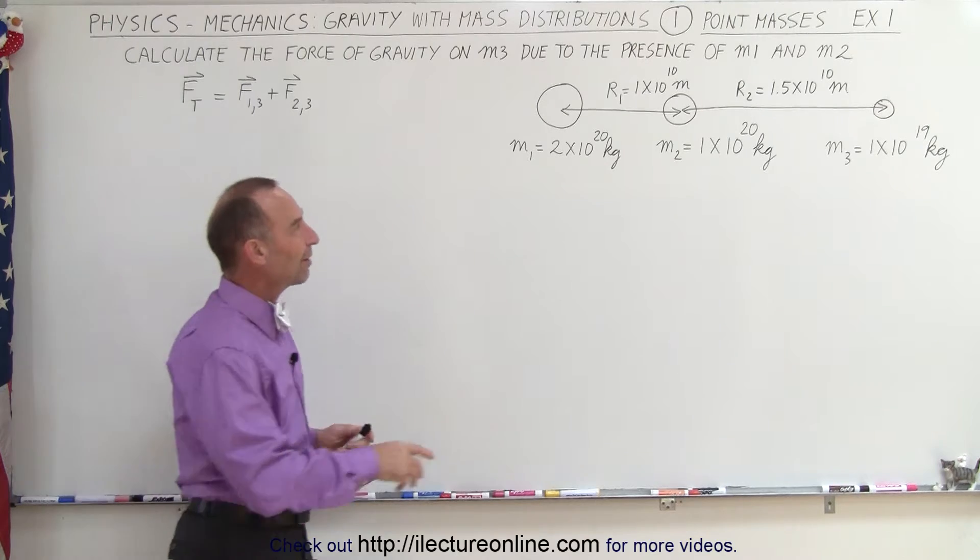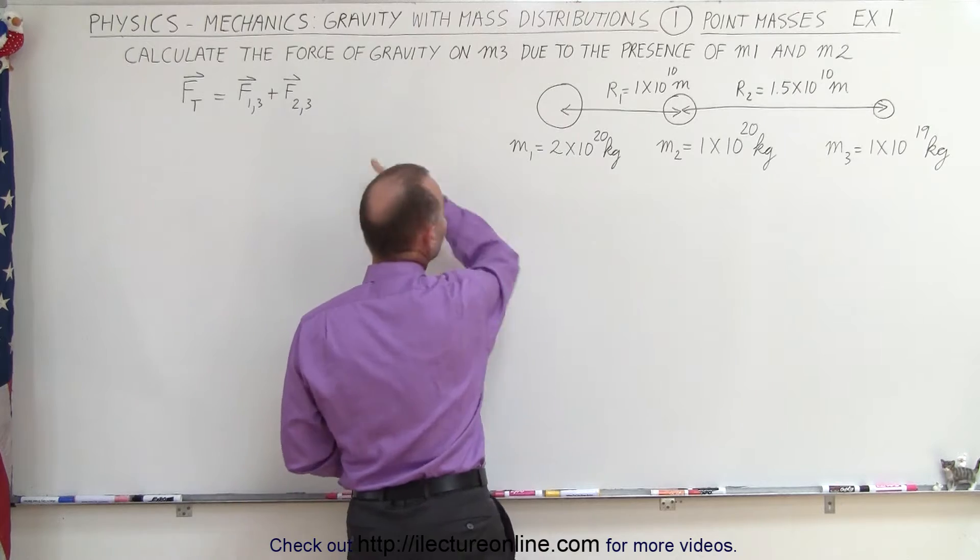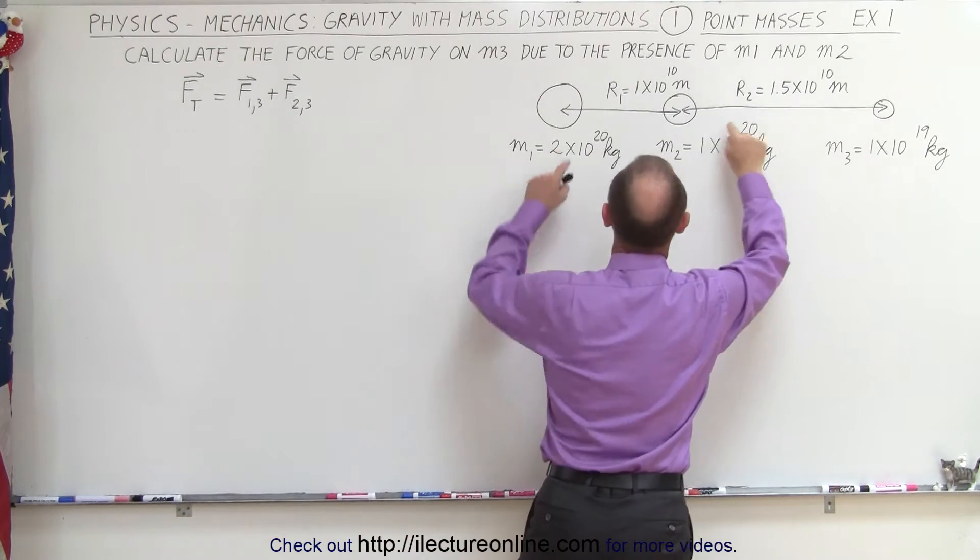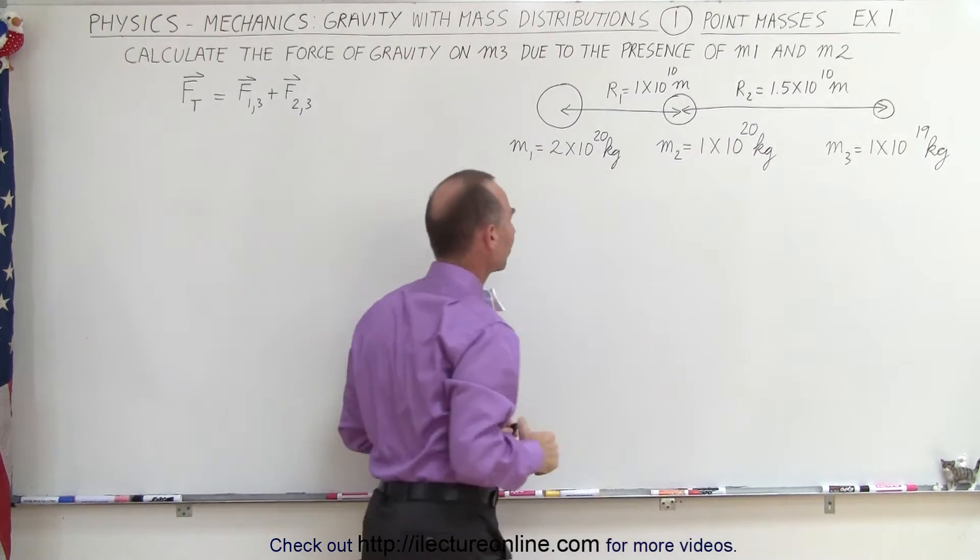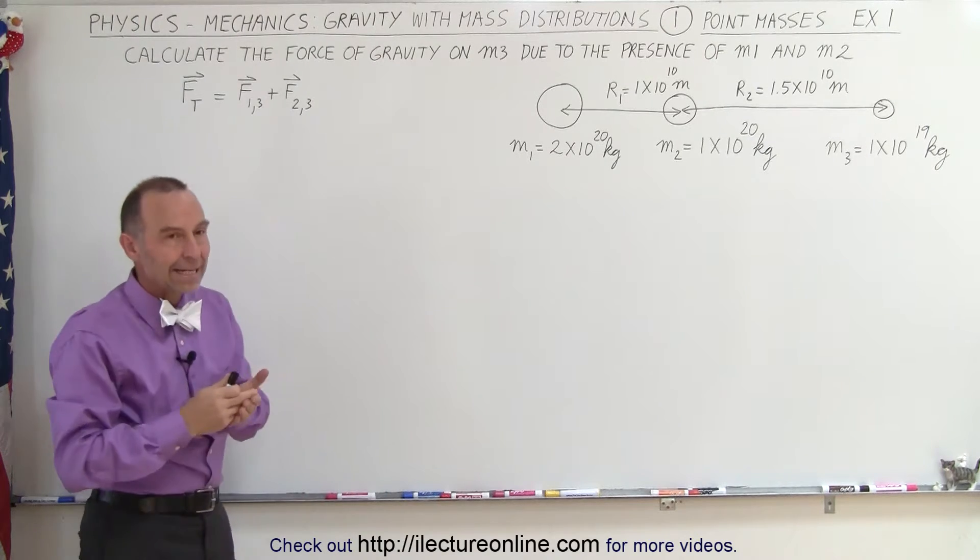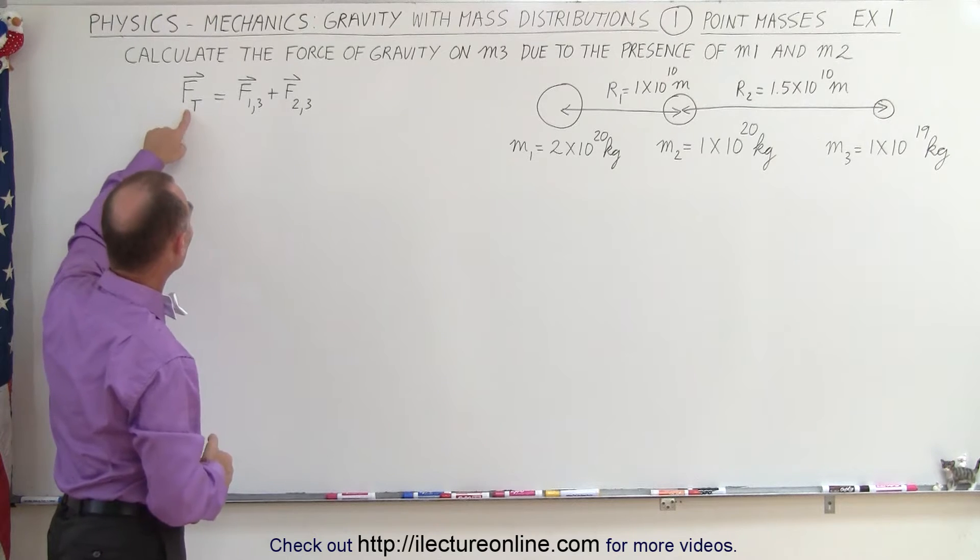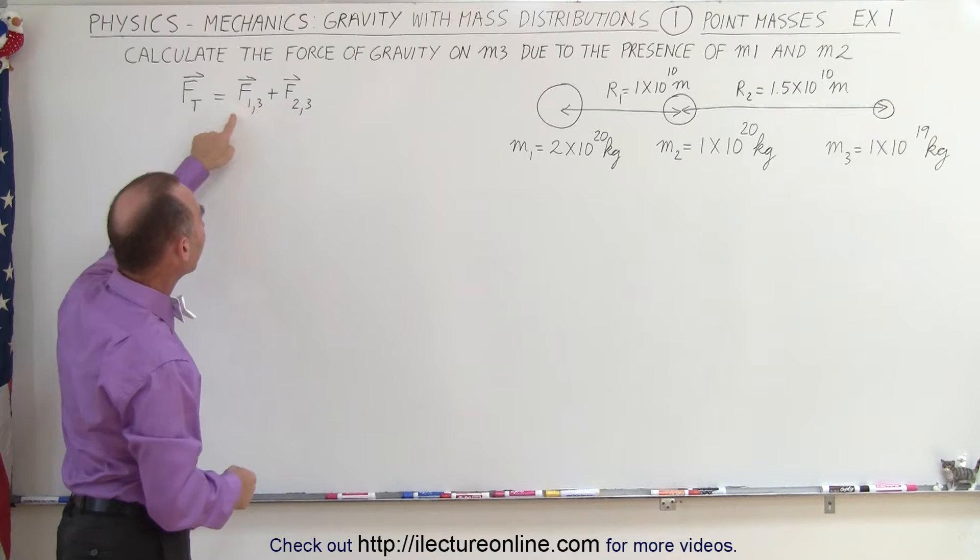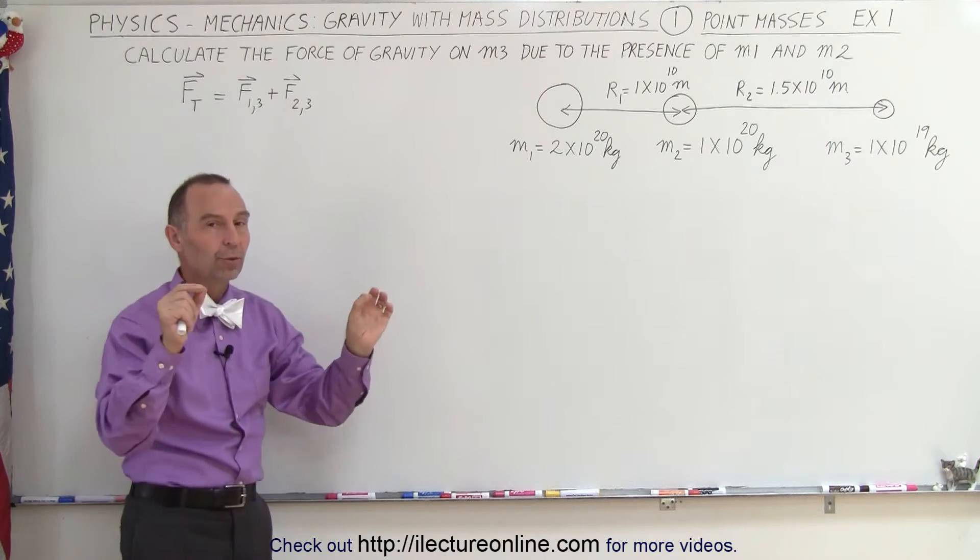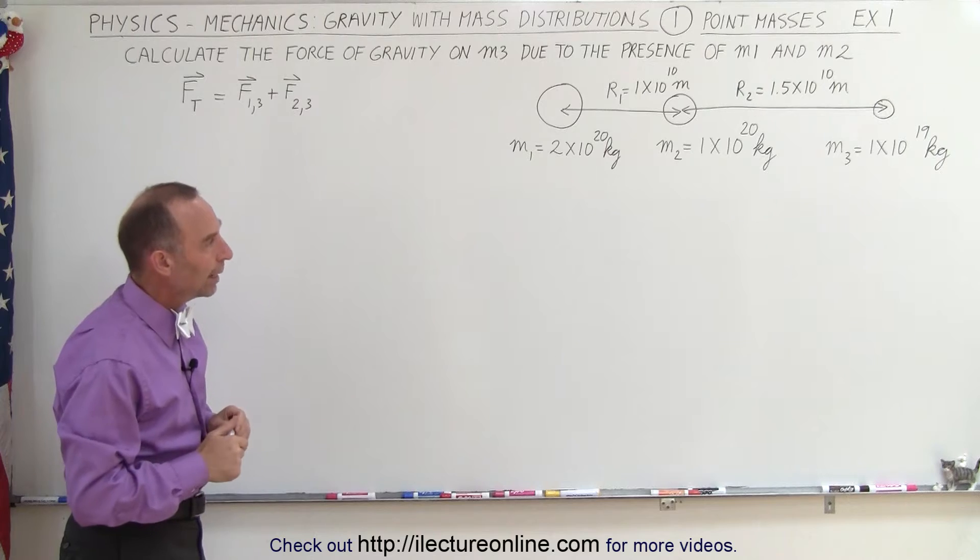Now notice here that we have three masses m1, m2, and m3, and we're trying to find the force of gravity on m3 due to the presence of the other two masses m1 and m2. Now gravity, or the force of gravity, is indeed a vector quantity, so to find the total force on m3 we have to add the two vector quantities: the force between m1 and m3 and the force between m2 and m3.